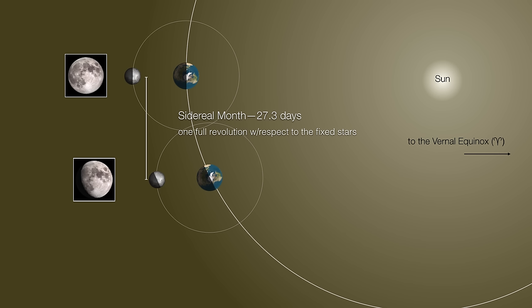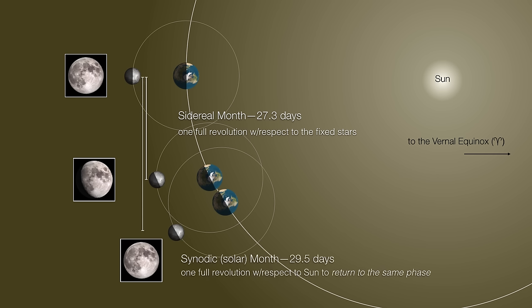That means if we want to get back to our starting phase — in this case the full moon — we have to allow the moon and indeed the earth to orbit a little bit more. We need a couple of extra days of motion, and this gives us what's called a synodic month, or solar month, literally with respect to the sun. This is what gets the moon back to the starting phase. From any given phase to any given phase, it's going to take 29 and a half days.